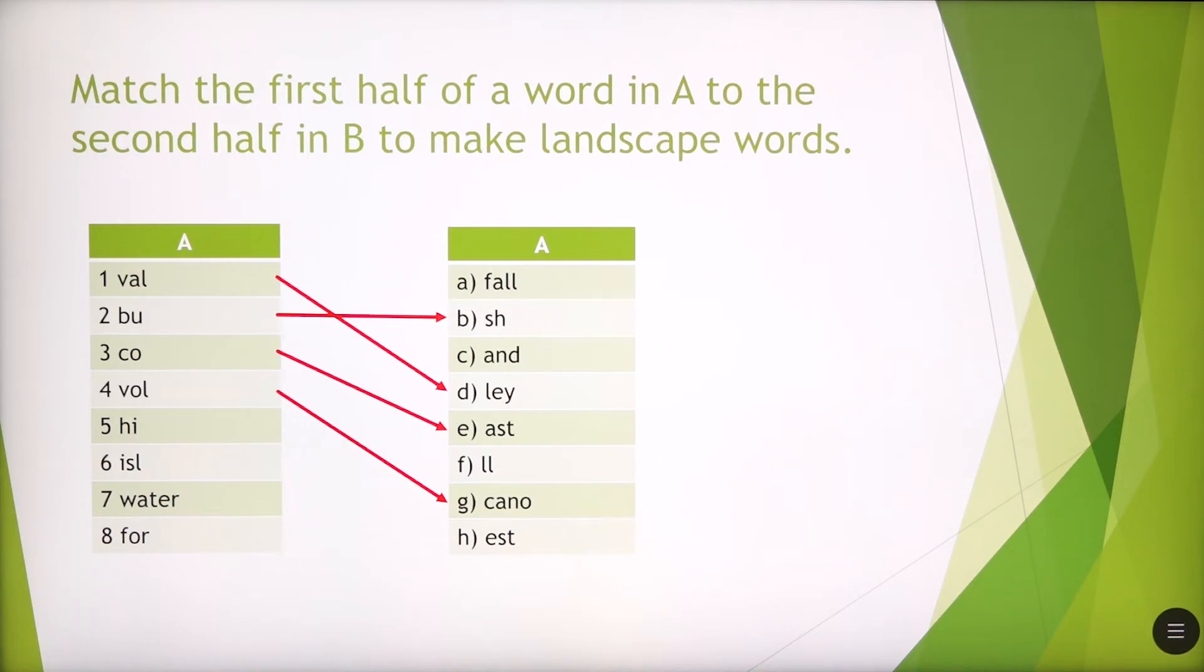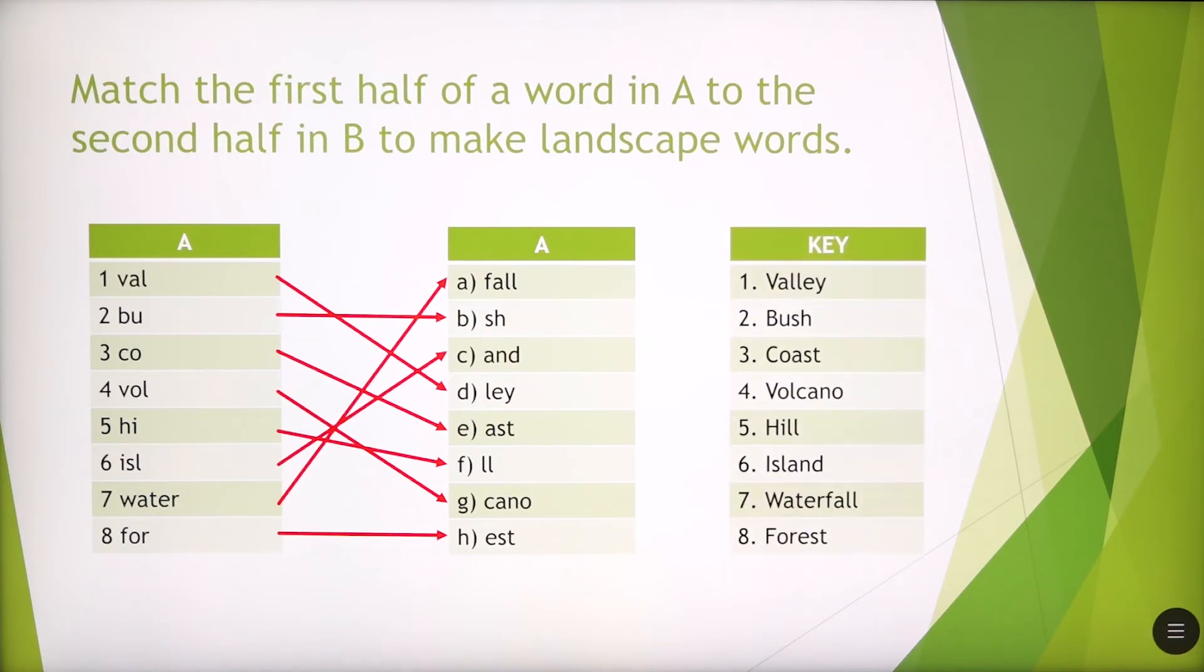Number five, hill. Number six, island. Number seven, waterfall. Number eight, forest. So these are the words that we can find from the combinations that we've made.